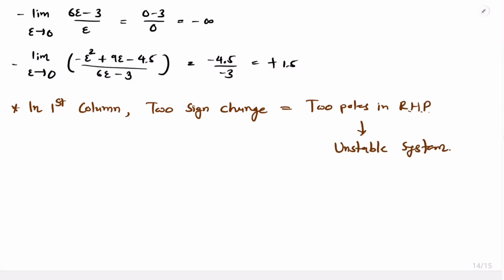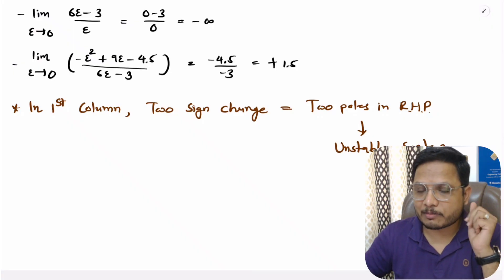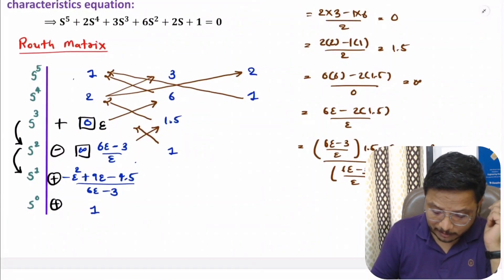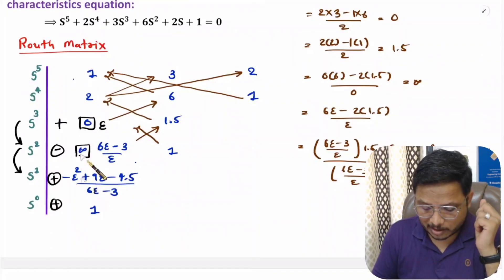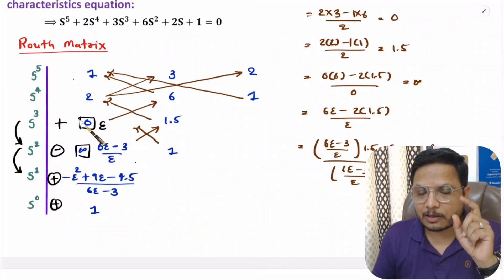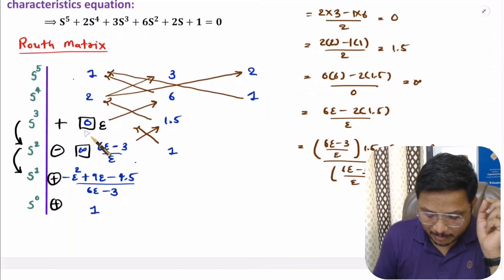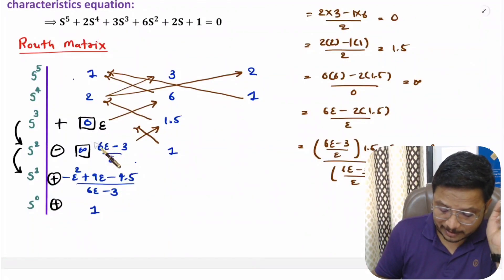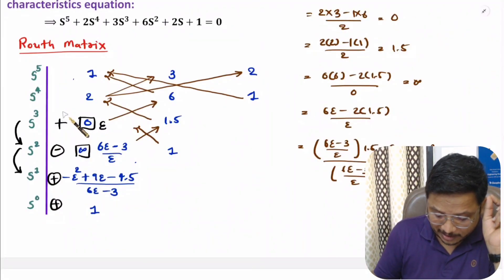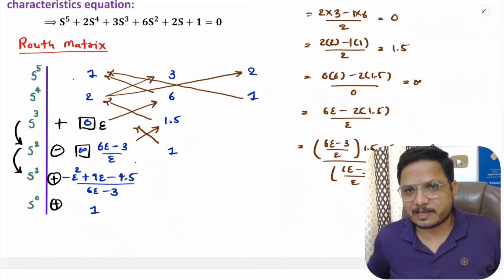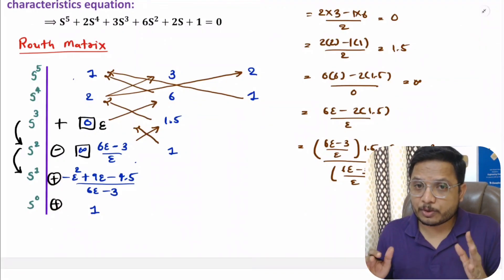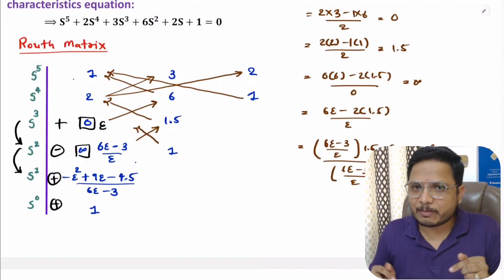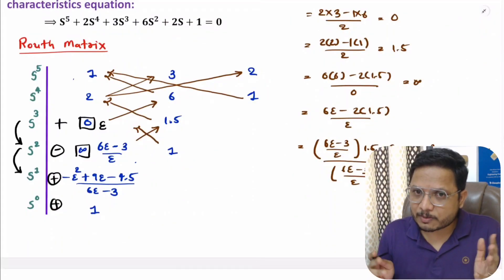That is how we solve questions based on Routh stability criteria. In Special Case 1, if any element in the first column becomes 0, replace that element with epsilon, and at the end let epsilon tend to 0 to identify sign changes. I hope you have understood this. If any confusion remains, place it in the comment section — I will be happy to help. Thank you so much for watching this video.